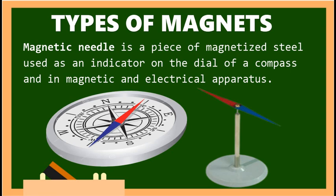Another type of magnet is a magnetic needle. A magnetic needle is a piece of magnetized steel used as an indicator on the dial of a compass and in magnetic and electrical apparatus.